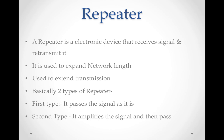Repeater kya karta hai — it is an electronic device that receives signals and retransmits them. Aisa kyun karta hai? It is used to expand network length. Agar hume ek point se dusre point tak data send karna hai aur data quality maintain karni hai, so we need a repeater. It is also used to extend transmission — agar hume signal ko zyada door tak bhejna hai, toh repeater use karna padta hai.